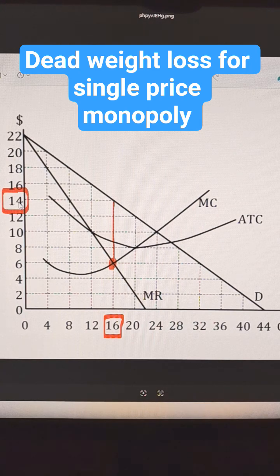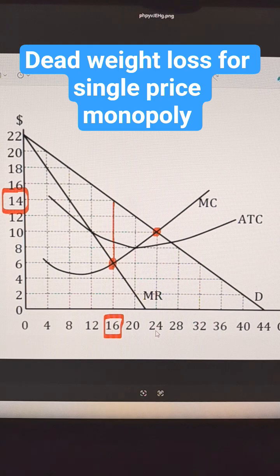We want to compare that to the allocatively efficient point, which is where marginal cost equals demand. That's right there. That would be a price of 10 and a quantity of 24. So we're losing 8 units.